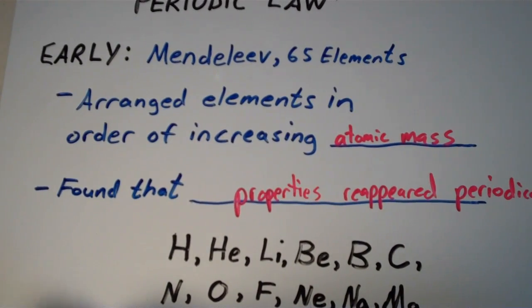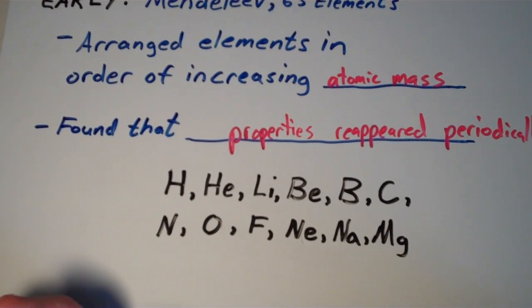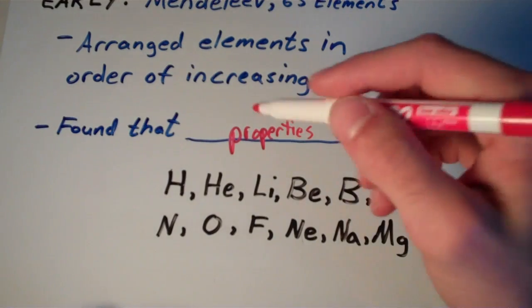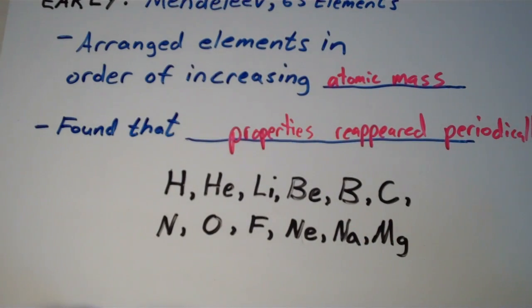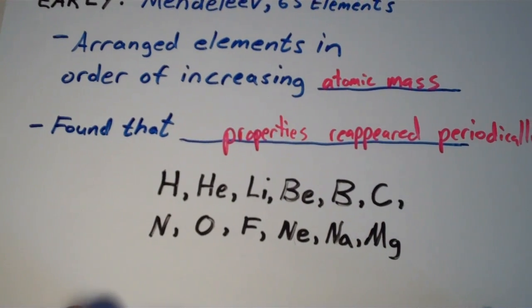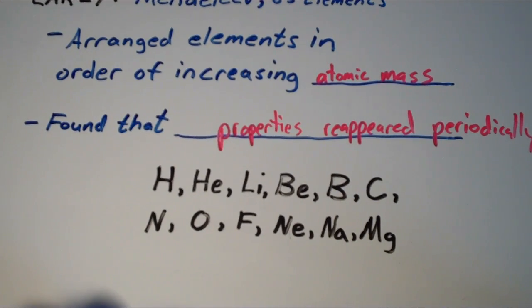To give you an idea of what that means, here I have a list of the first 12 elements on the periodic table. Hydrogen is the first one, helium is the second one. These are arranged in order of increasing atomic mass. As I said earlier, the properties of all these elements were known.